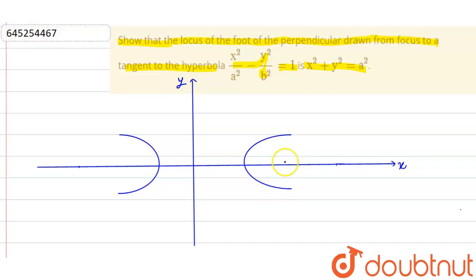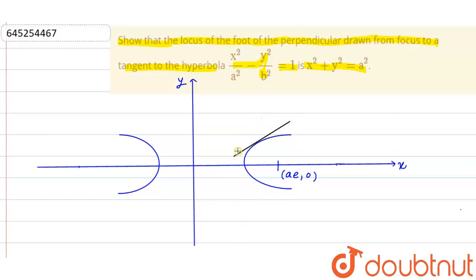Let's say this is the hyperbola we have, this is the y-axis, this is the x-axis. And let's say this is the focus, that is (a, 0).